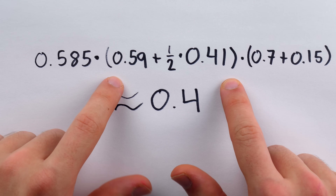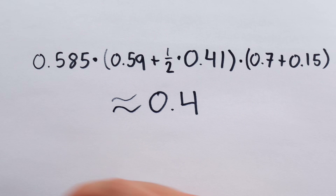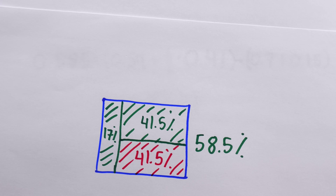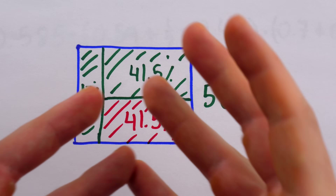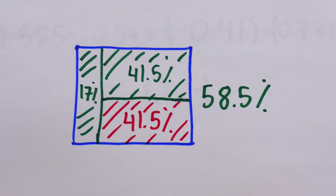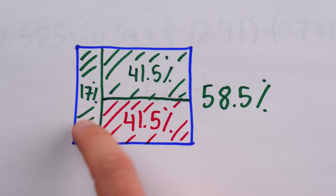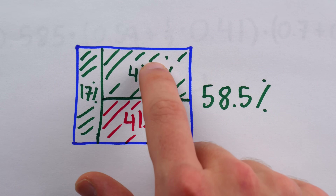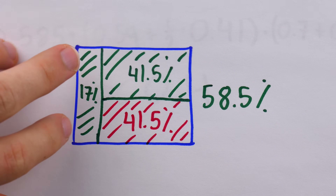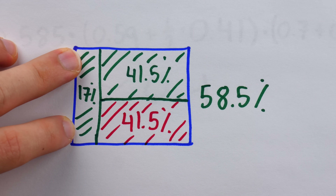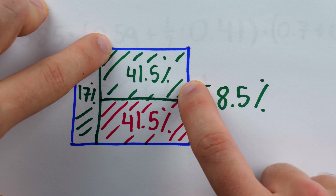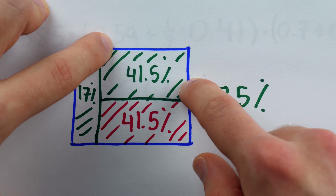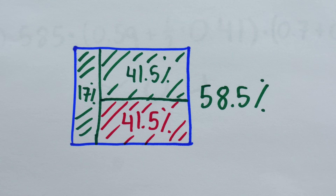In each of these probability calculations, we're actually using something called the law of total probability — a beautiful and intuitive law telling us that to calculate the probability of an event, we can add up the probabilities of the different ways that event could happen. There's a 17% chance we get the question correct because we know the answer, but also a 41.5% chance we get it correct in the case we don't know the answer, since we might still get it right by luck.